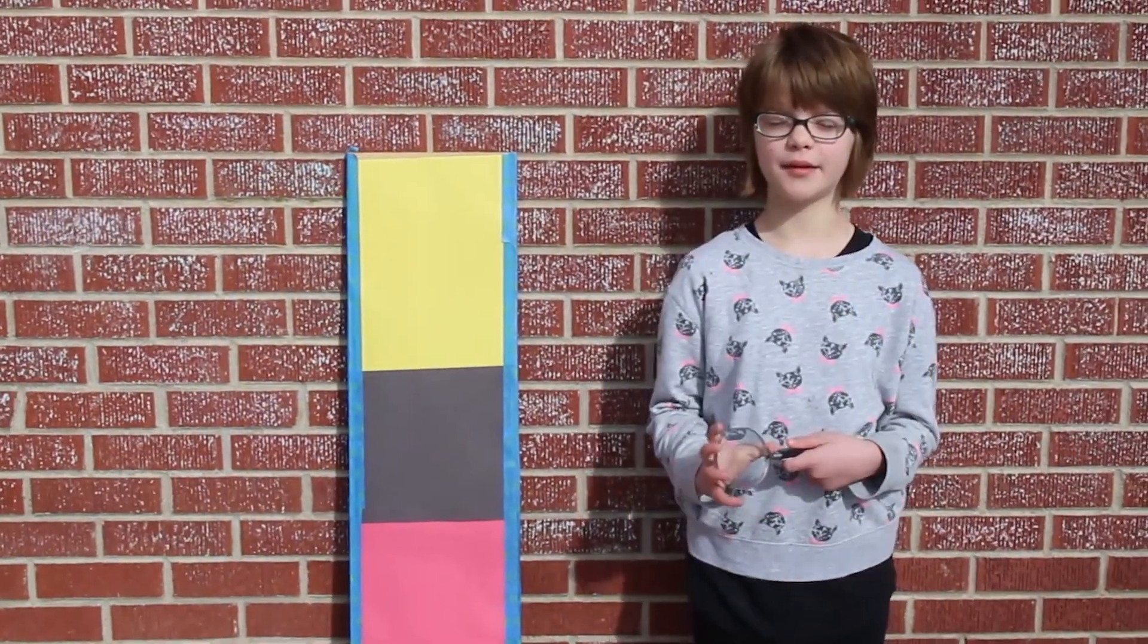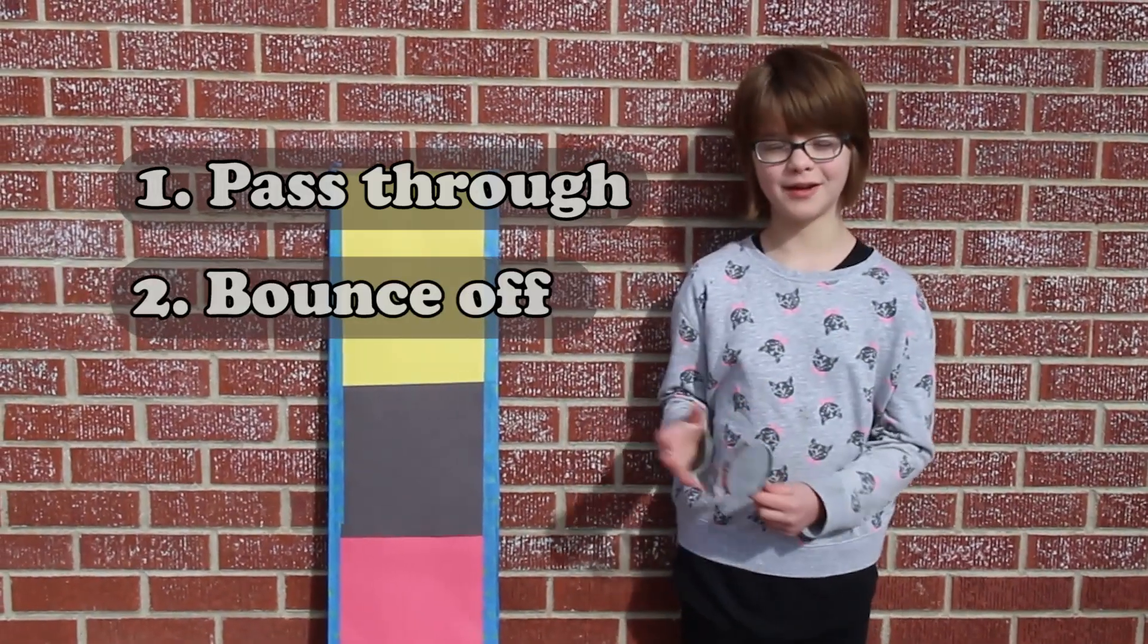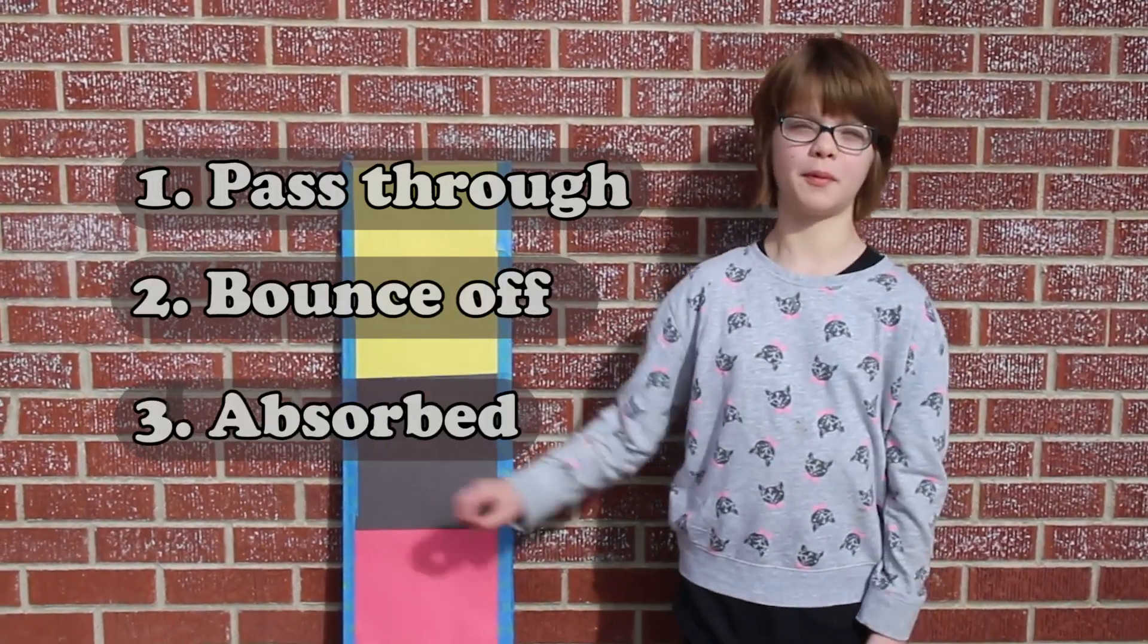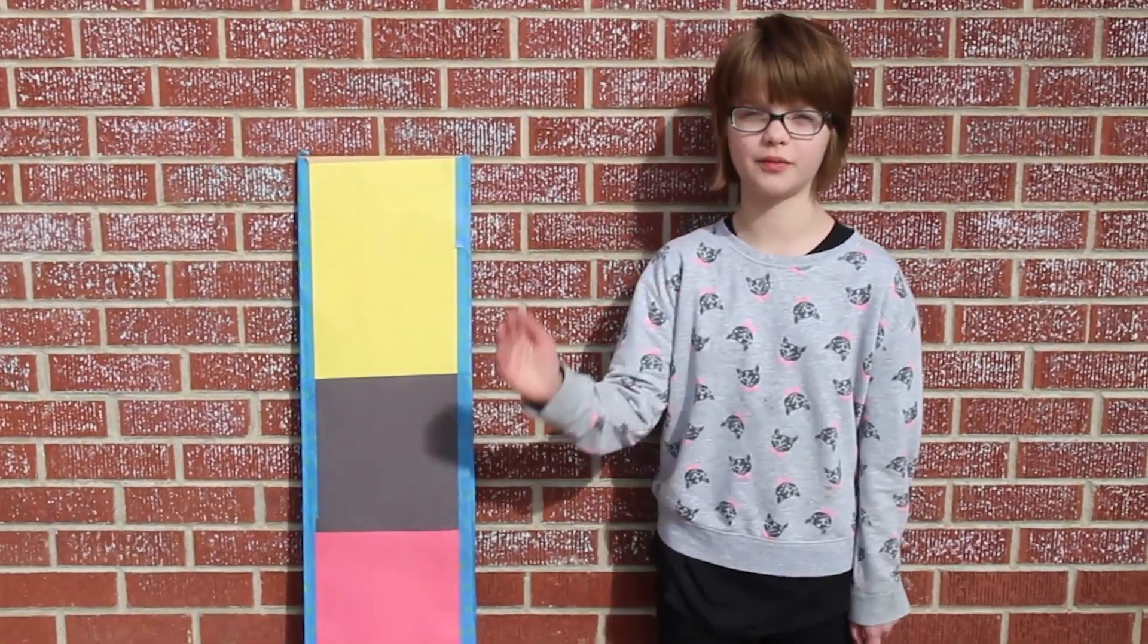When light hits an object, there are three things that it can do. If it's translucent, it can pass through an object, or it can bounce off of an object, or be absorbed by an object. Often it's a combination of those three things. You've probably heard that's how color works.